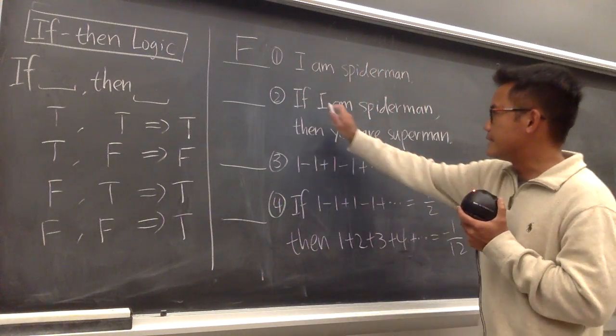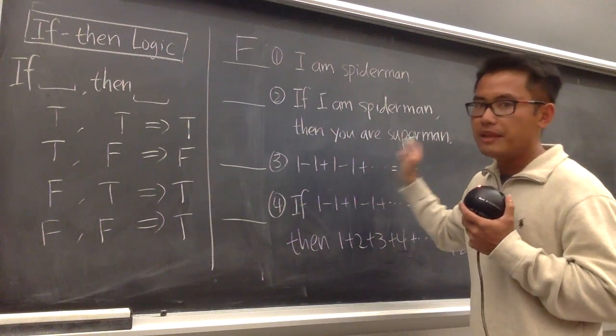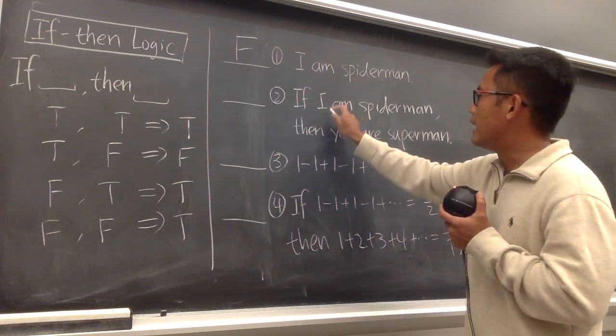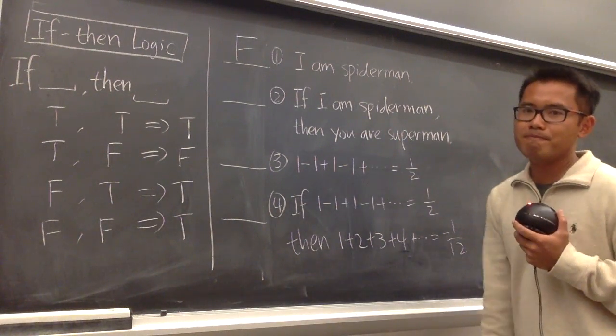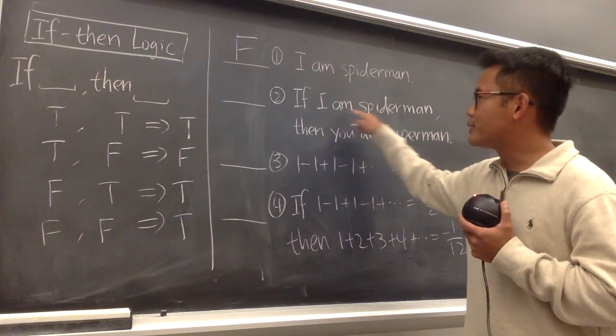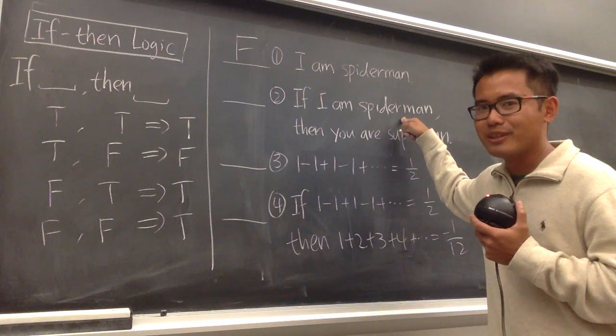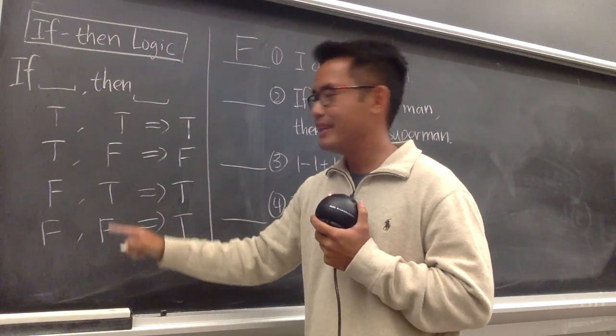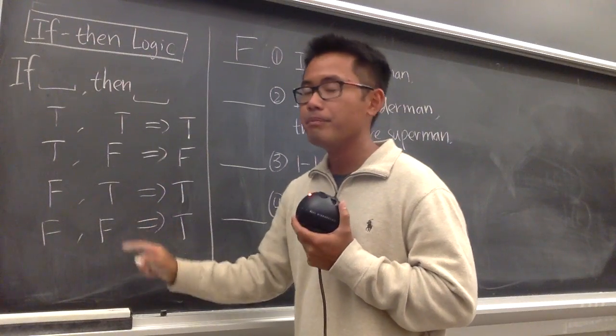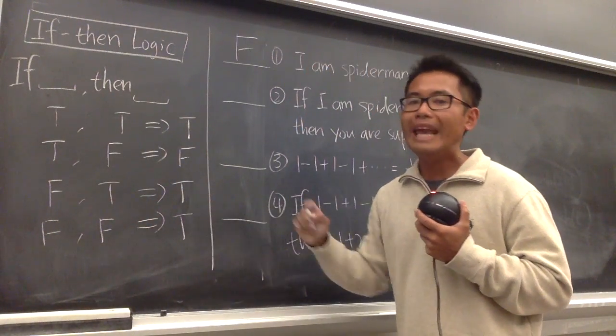Next, if my statement, this is an if-then statement now, says: if I am Spider-Man, then you are Superman. Well, this right here was false, a false condition. And when you have a false condition, it doesn't really matter what you're trying to conclude. It can be true or false, it doesn't matter, because at the end, it will be true anyway.